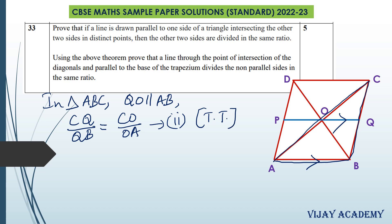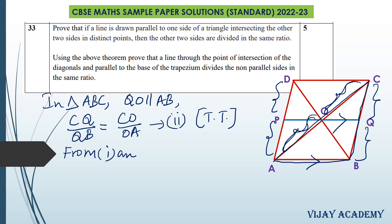From equations 1 and 2: equation 1 gives DP divided by PA equals CO divided by OA, and equation 2 gives CQ divided by QB equals CO divided by OA. Since both right-hand sides are equal, by the axiom that things equal to equal things are equal to one another, we can write from equations 1 and 2: DP divided by PA is equal to CQ divided by QB. This is the proof required. Please subscribe to my channel.